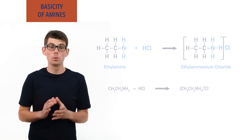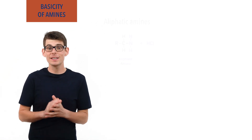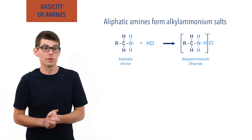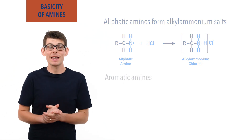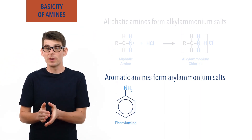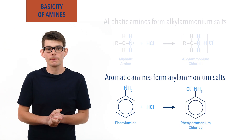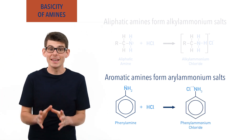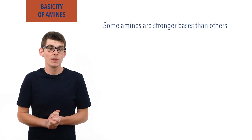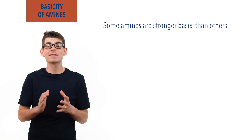The type of salt formed depends on the type of amine reacting with the acid. Aliphatic amines will form alkylammonium salts, like the example just given, and aromatic amines will form arylammonium salts — such as phenylamine reacting with HCl to form phenylammonium chloride. The interesting thing is that some amines are able to act as stronger bases than others. We call this property of how basic a compound is its basicity.